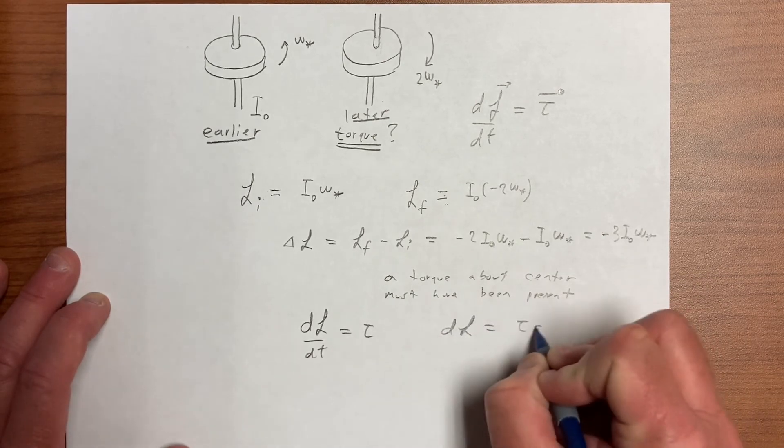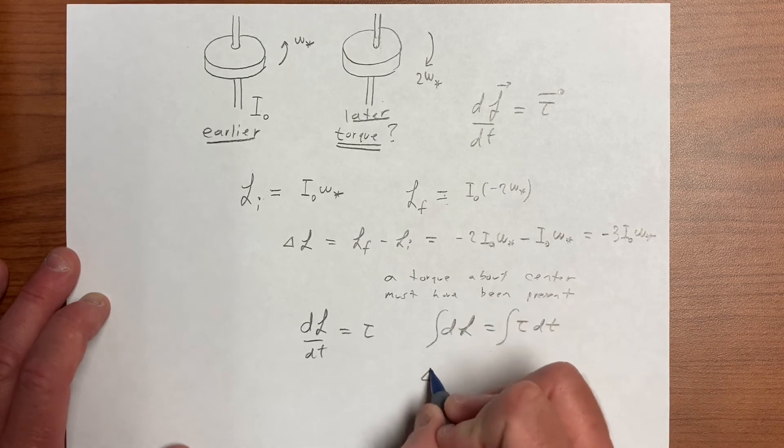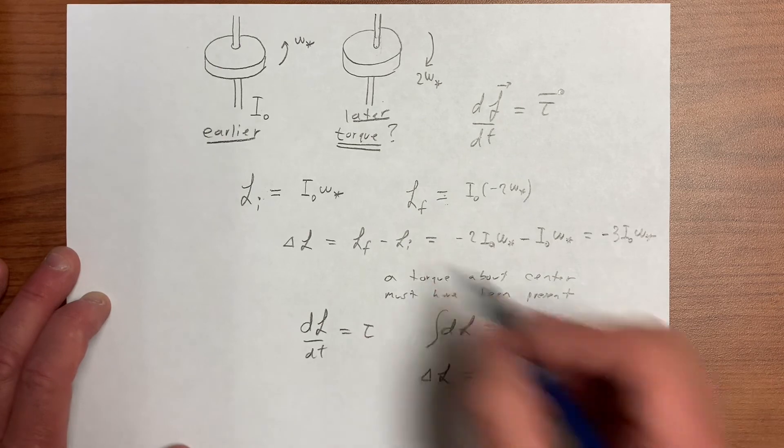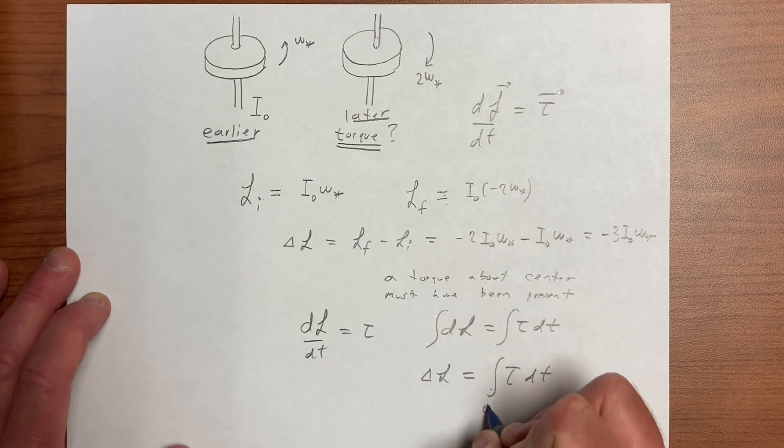Then of course dL is equal to tau dt, and so we integrate both sides together, and we get integral dL, which we found that magnitude.